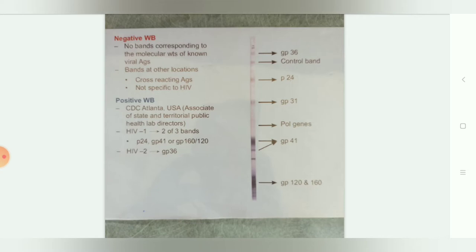For a positive western blot result, two of three bands must be present: p24, gp41, and gp160 for HIV-1. For HIV-2, the relevant band is gp36.